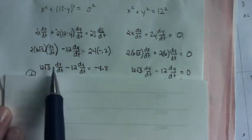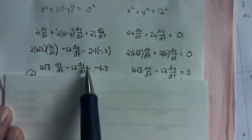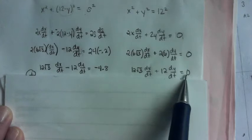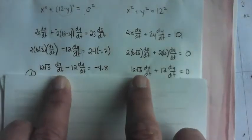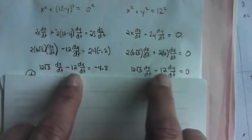So this one simplified down to here with DX's and DY DT's. Same thing here. And then I just did a system of equations elimination. I lined them up.